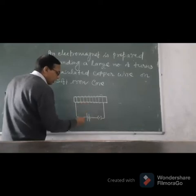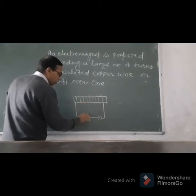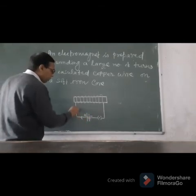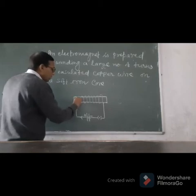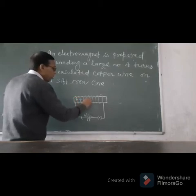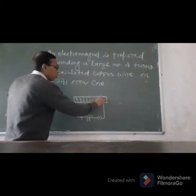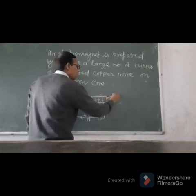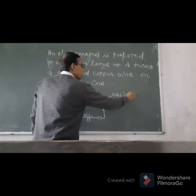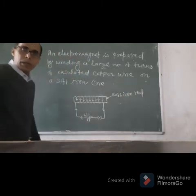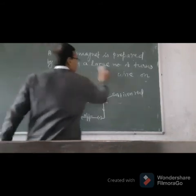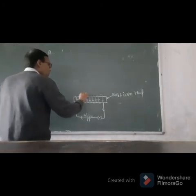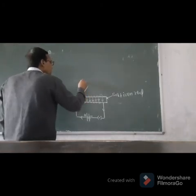When current is applied to this circuit, the direction of the current is from the positive terminal of the battery to the negative terminal. Current flows through the wire which is wound over the soft iron rod. This iron wire is the soft iron rod.